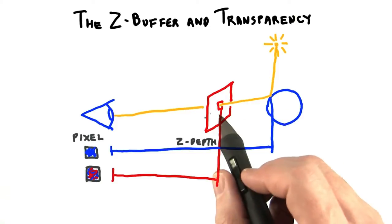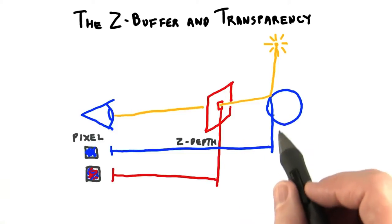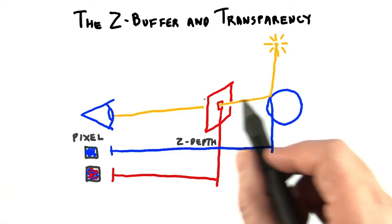How does the z buffer work when using transparent objects? Think about what the z buffer is doing. It stores the depth of the object that is closest to the eye.